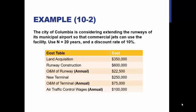Let's do an example. This is example 10-2 in the book for anyone following along. The City of Columbia is considering extending the runways of its municipal airport so that commercial jets can use the facility, using an end of 20 years and a discount rate of 10%.